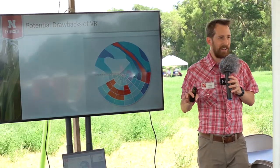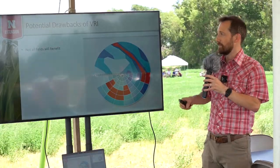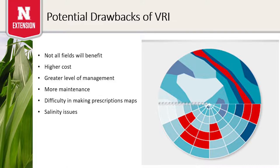There are some drawbacks to VRI as well. Not all fields are a perfect fit — some fields are really uniform with only one or two soil types and fairly flat terrain, so they wouldn't necessarily pay for the technology. There is a higher cost involved with more sensors, solenoids, and controls required. You have to make sure when looking at a field that the benefits — both monetary and environmental — justify those costs.